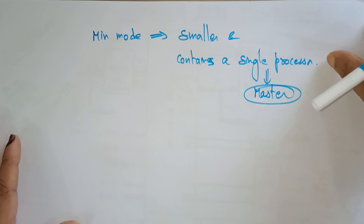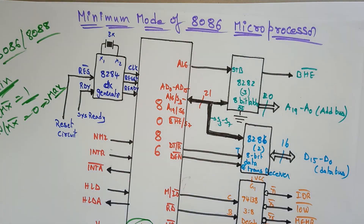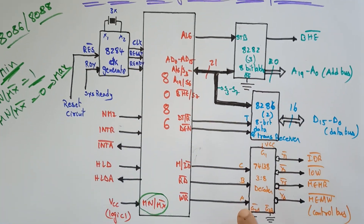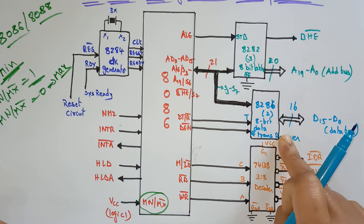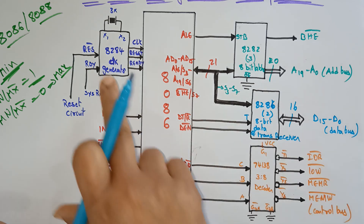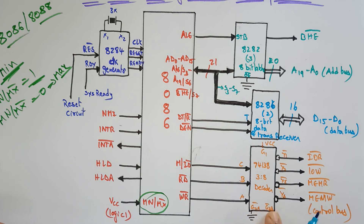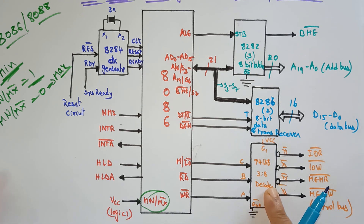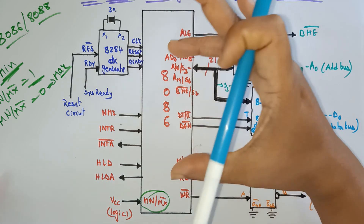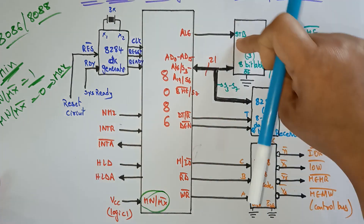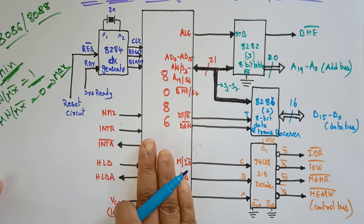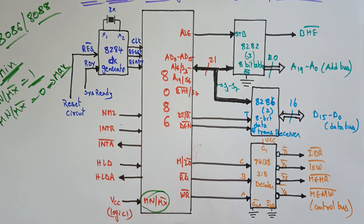The remaining components visible in the diagram connected to the 8086 are: the 8282 latches, 8286 transceivers, clock generator, and memory and I/O devices. A 3-to-8 decoder connects the memory and I/O devices. There are four main components connected to the 8086 microprocessor, and we'll look at each pin clearly.